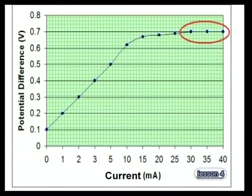Notice that the potential difference reaches a maximum when the current increases to more than 30 milliamperes. To explain our results, we'll go back to the studio and take a closer look at what happens inside a diode where the N and P-type semiconductors join together.